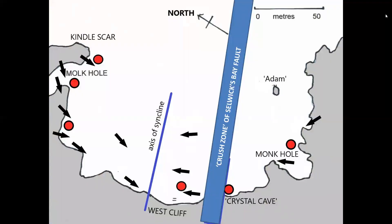This, like the zone of deformation at Staple Nook visited in part one, is part of the Flamborough Head–Howardian Hills Fault Complex, reactivated by movement on the northern side of the Market Wheaton structure. It's further complicated by its proximity to the offshore Peak Trough fault system.